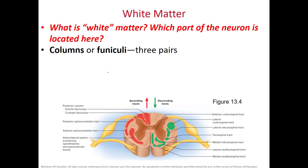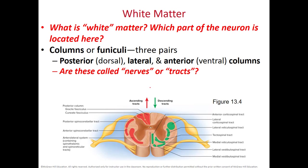The white matter is made of myelinated axons arranged in columns called funiculi — you have three pairs: posterior or dorsal, lateral, and anterior or ventral columns. These consist of tracts. We use the term 'tracts' for a collection of axons in the central nervous system. The same collection of axons in the peripheral nervous system we call nerves.